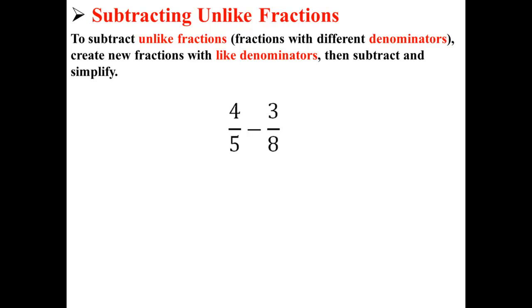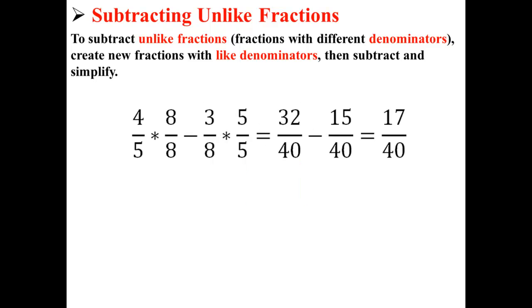So now let's try to subtract the fractions 4 over 5 and 3 over 8. They have unlike denominators, so first we must make them have like denominators. We multiply 4 over 5 times 8 over 8, and we multiply 3 over 8 times 5 over 5. This gives us the fractions 32 over 40 and 15 over 40.